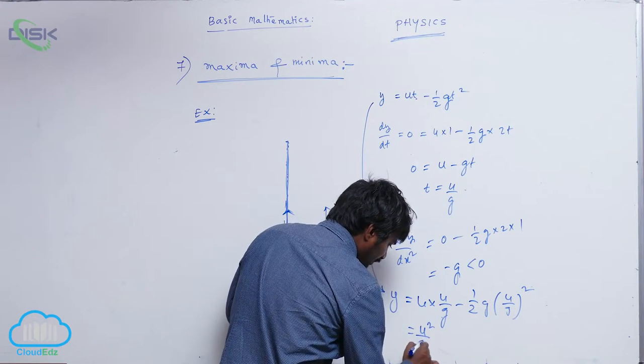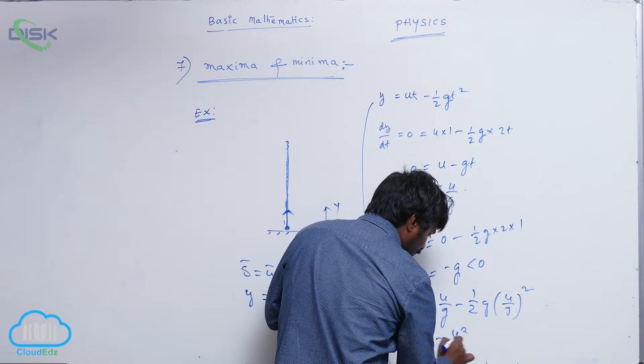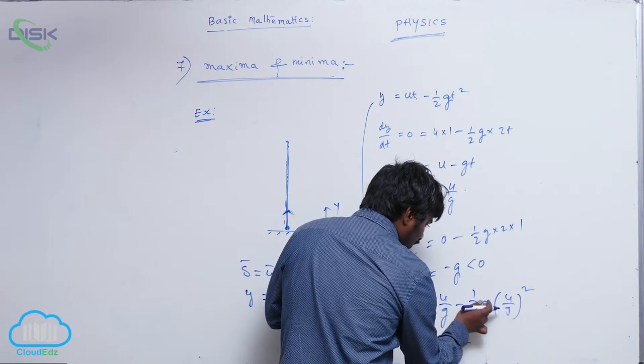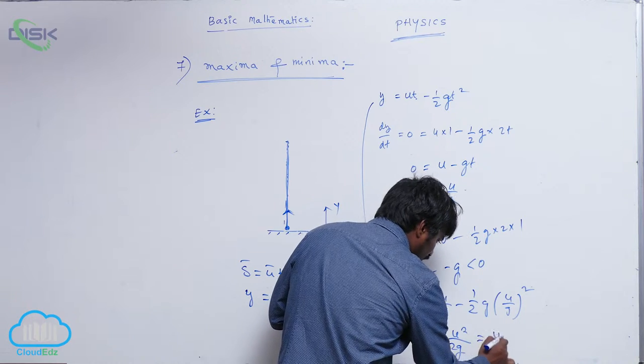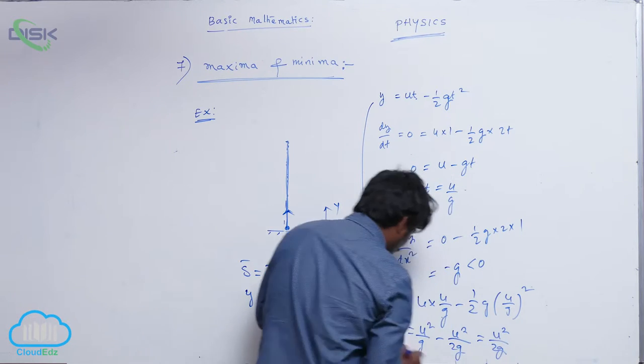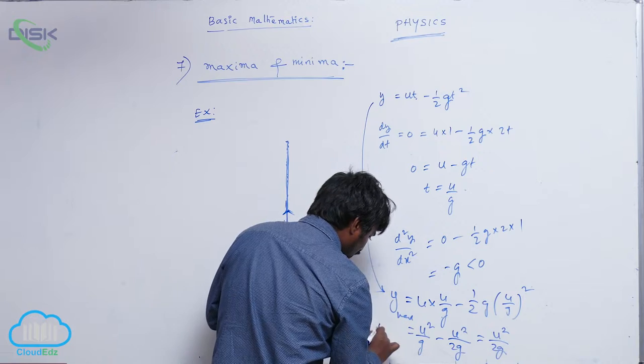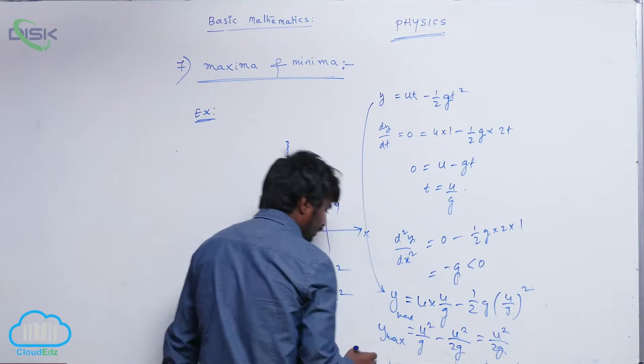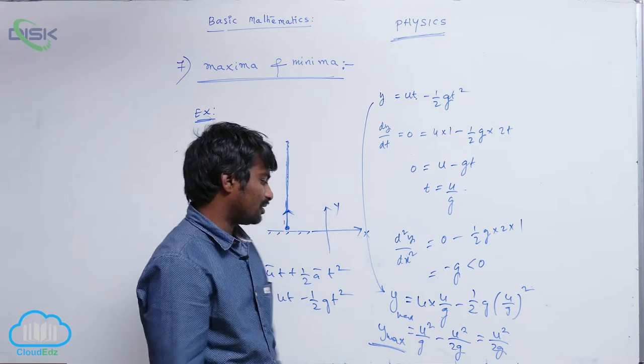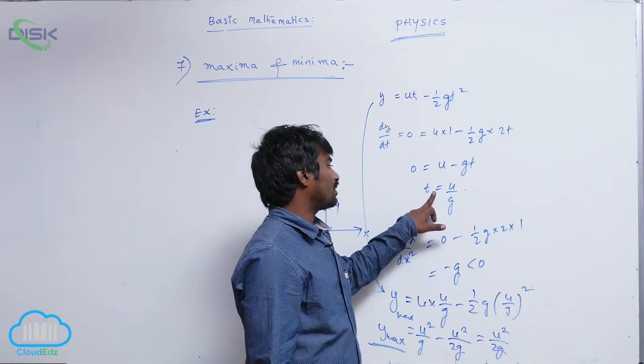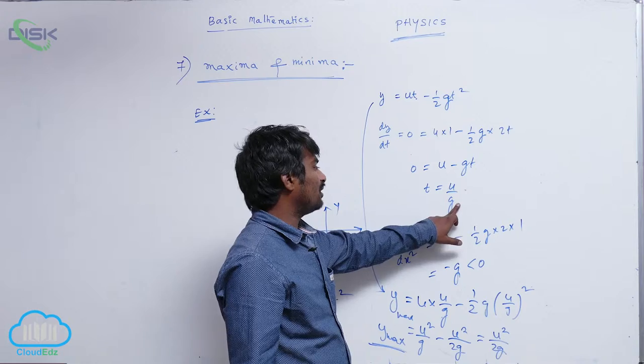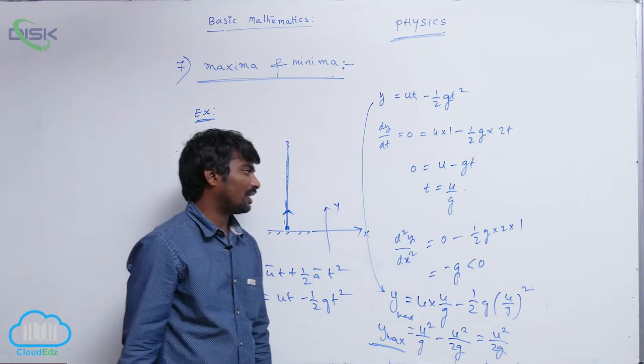So u² by g minus u² by 2g. So this equals u² by 2g. This is maximum value, y_max. You say this is maximum height, equal to u² by 2g, and it attains after what time? u by g, generally we call it the time of ascent.